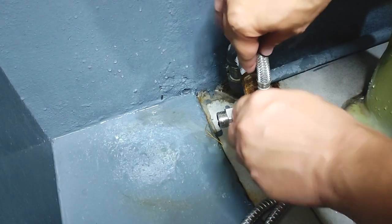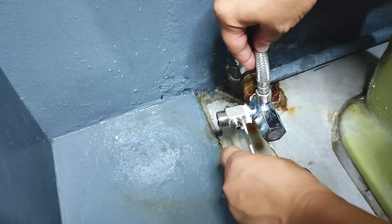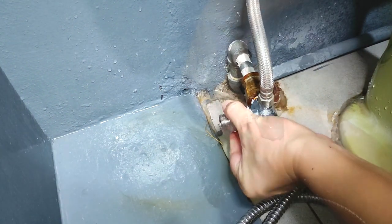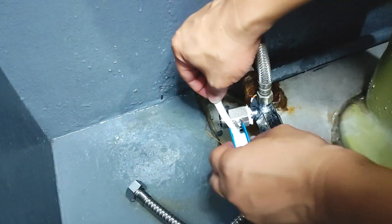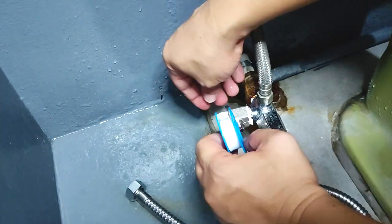What is ironic though is that this flat wrench that came with the package is simply too big for this metal adapter that's also part of the package. Anyway, I'll just tighten by hand. Then we'll also wrap Teflon tape on this side of the adapter like so.